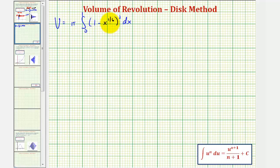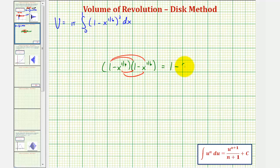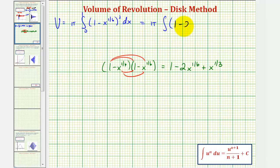Let's begin by squaring the quantity one minus x to the one-sixth. We get four products: one times one is one, then minus x to the one-sixth minus another x to the one-sixth gives minus two x to the one-sixth, and negative x to the one-sixth times negative x to the one-sixth gives plus x to the one-third (since one-sixth plus one-sixth equals two-sixths, or one-third). So we have pi times the integral of one minus two x to the one-sixth plus x to the one-third, integrated from zero to one.